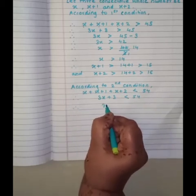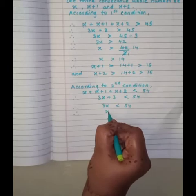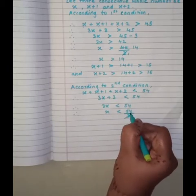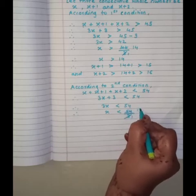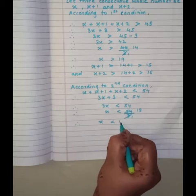Therefore, 3X is less than 54. Therefore, X is less than 54 divided by 3. 3, 1s are 3. 3, 1s are 3. 2 left. 2 and 4, 24. 3, 8s are 24. So we got X is less than 18.